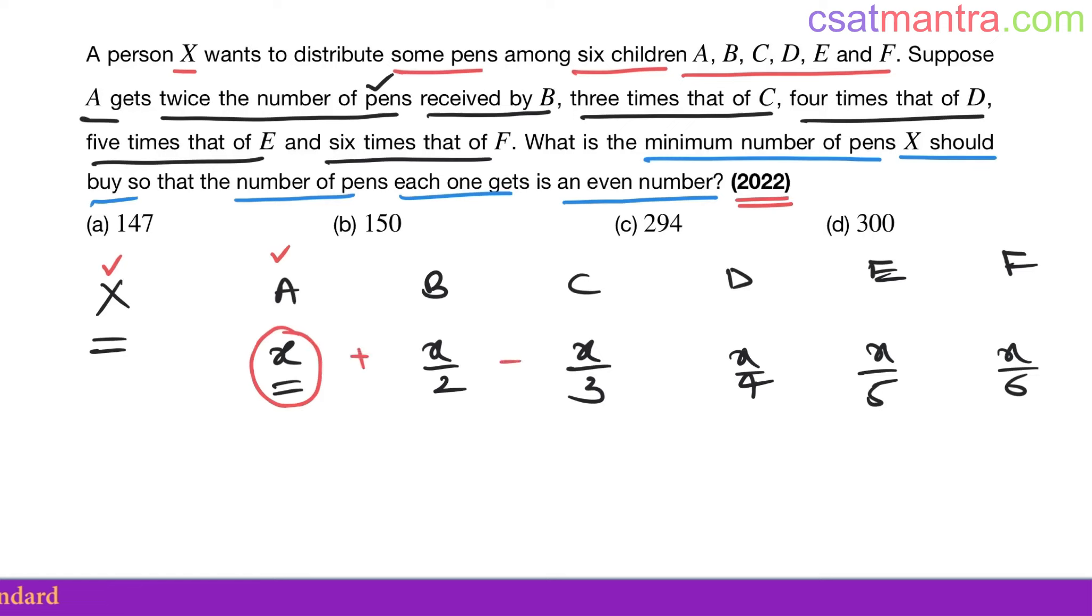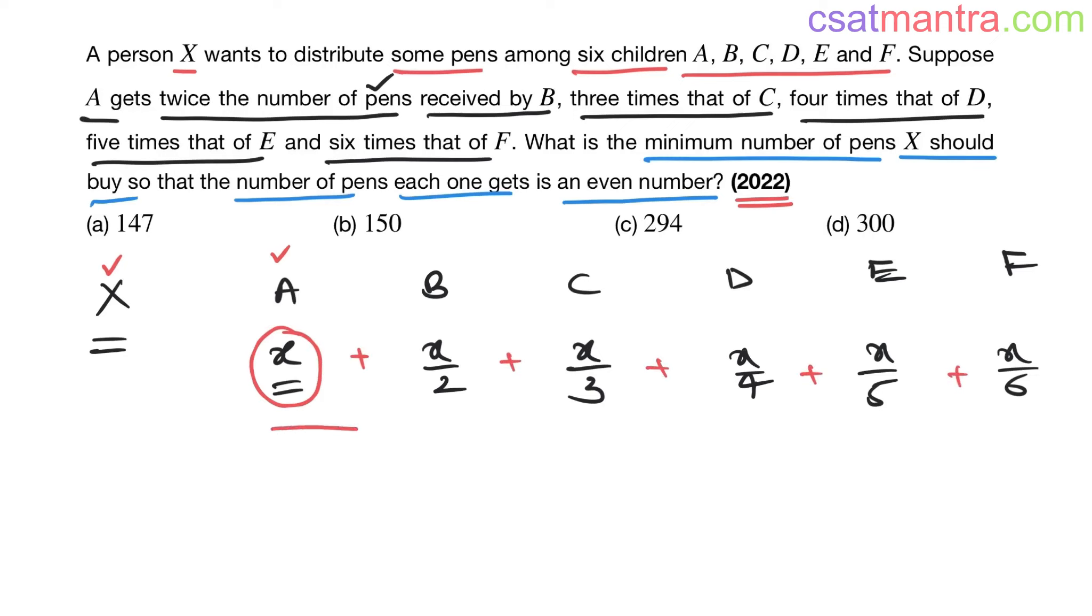That would be X plus this sum. For this sum to be minimum, we need X to be minimum. And X should be common multiple of 2, 3, 4, 5, 6.